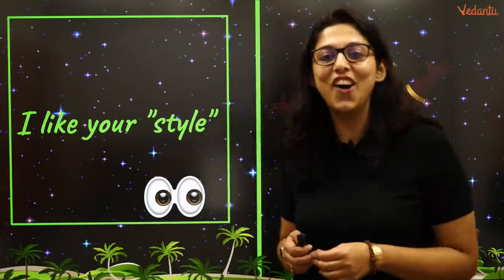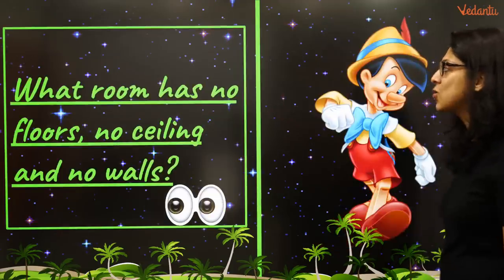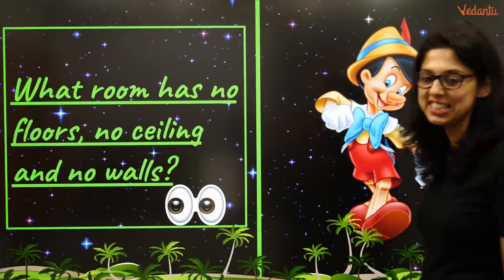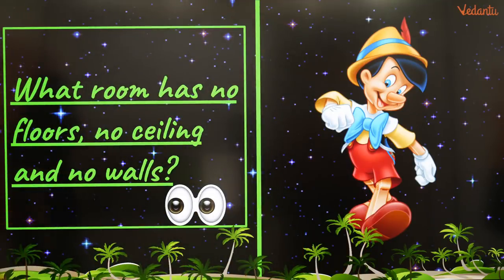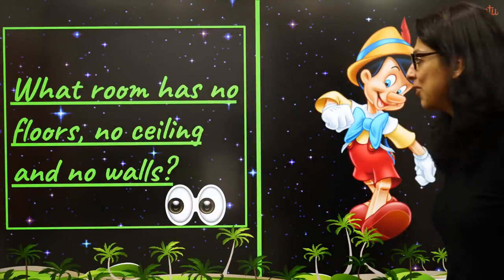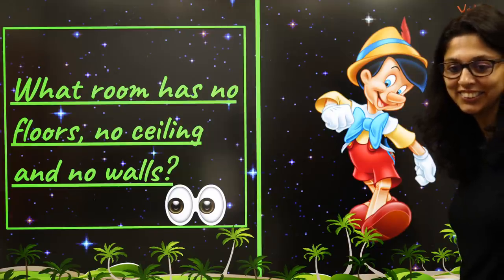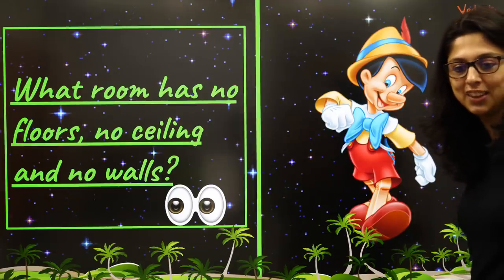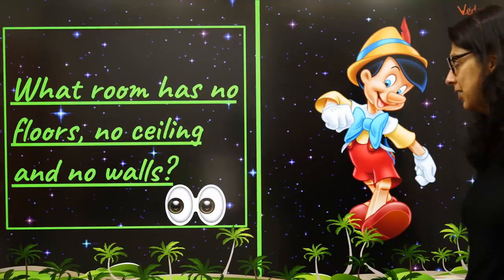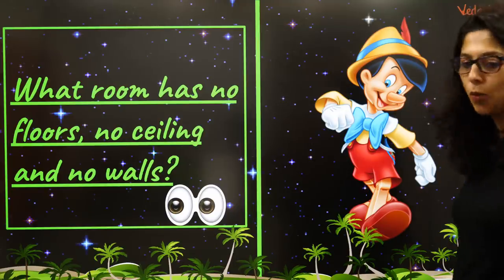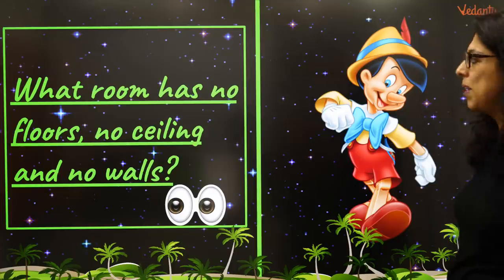'I like your style' — yes or no? How easy is that! And one last one: What room has no floors, no ceilings and no walls? Come on — Mycoplasma! The room is mushroom, and Mycoplasma is the smallest cell with no cell wall — that's the connection.